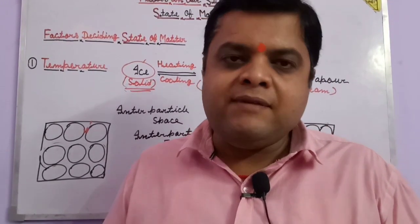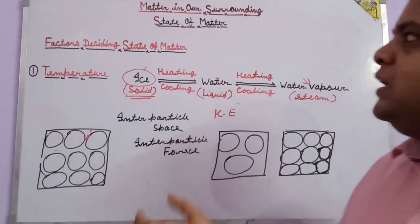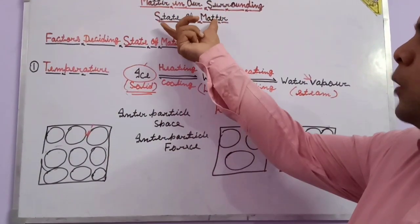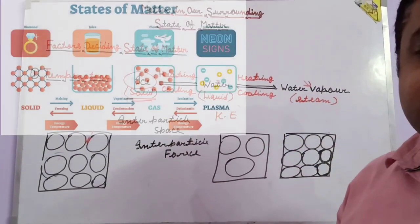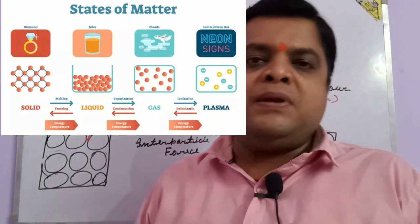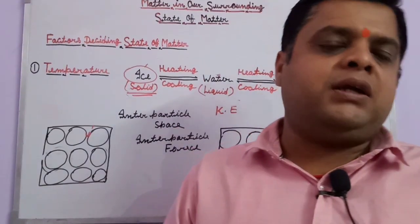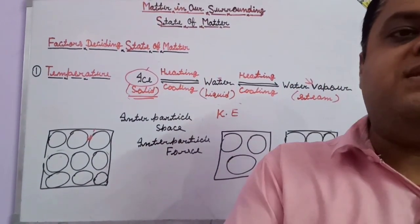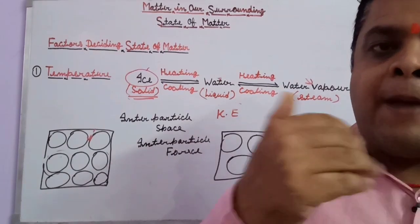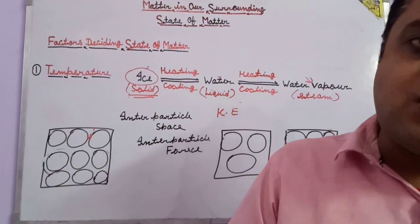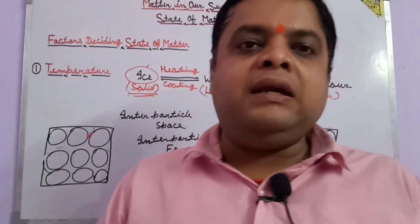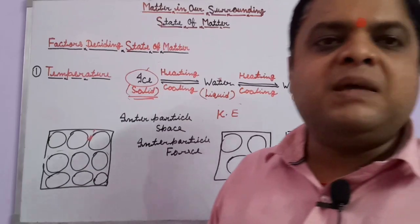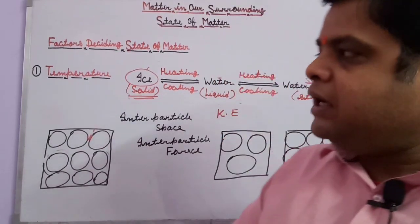Good morning students. Today I will start a new topic for class 9, trimester 1. The chapter is 'Matter in Our Surroundings.' In the previous video, we discussed the classification of matter. Matter can be classified in two ways: on a physical basis and a chemical basis. In this chapter, we discuss only the physical basis. There are five types of states: solid, liquid, gas, plasma, and Bose-Einstein condensate.